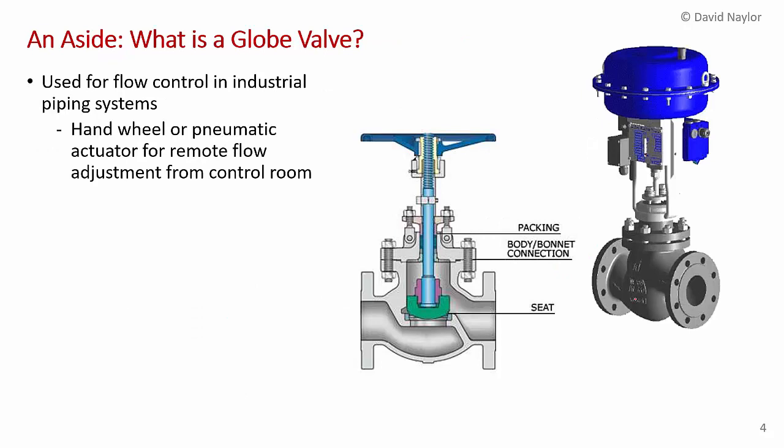As an aside, a globe valve is used for flow control in industrial piping systems. It can have a hand wheel to adjust the stem and seat position, or a pneumatic actuator for remote control from a control room. It has a round globular body, unlike a gate valve which is used for completely shutting off flow.